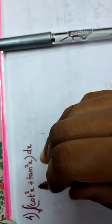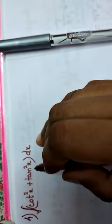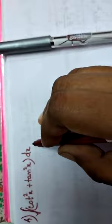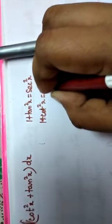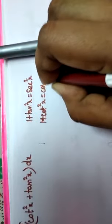Welcome to our fourth problem: integral of cot squared x plus tan squared x dx. Now, for our trigonometrical formulas: 1 plus tan squared x is equal to secant squared x, and 1 plus cot squared x is equal to cosecant squared x.